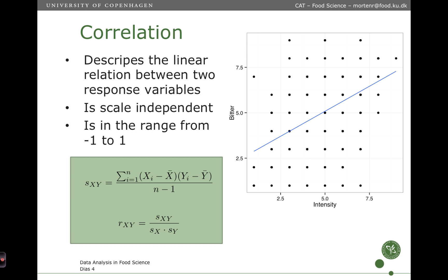The correlation describes the linear relation between two response variables. Here we have the two response variables, bitter and intensity. The correlation is scale independent, meaning it doesn't have any unit and has the same interpretation regardless of what we are measuring.